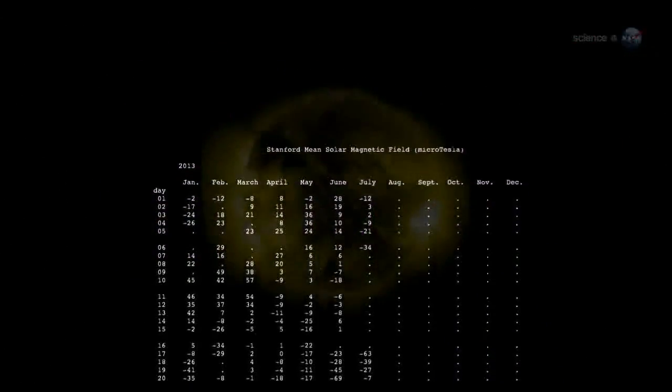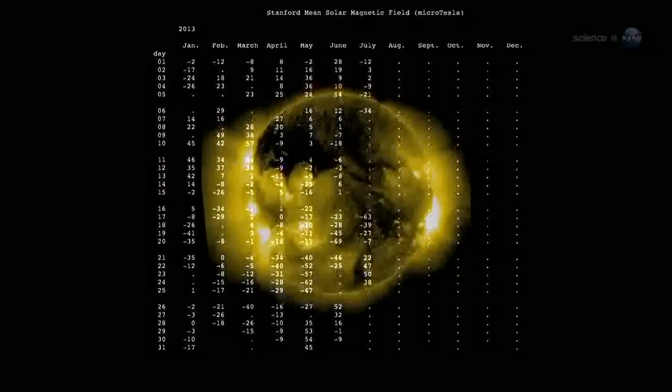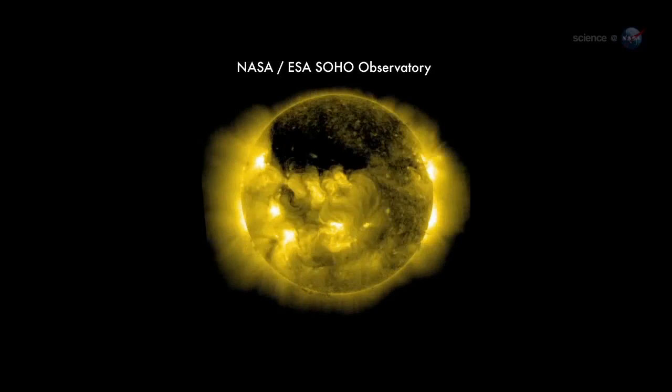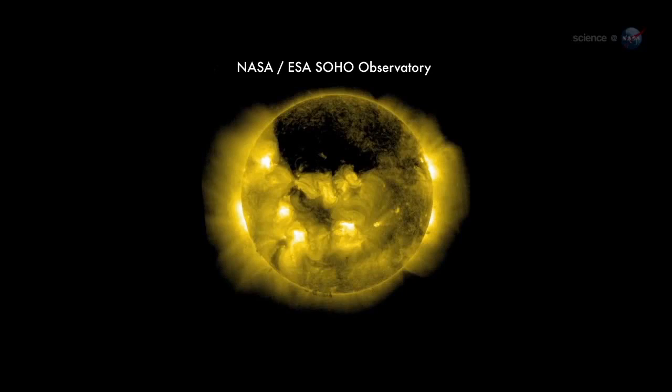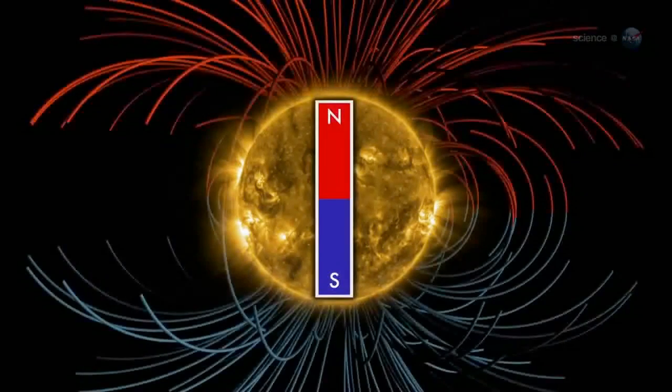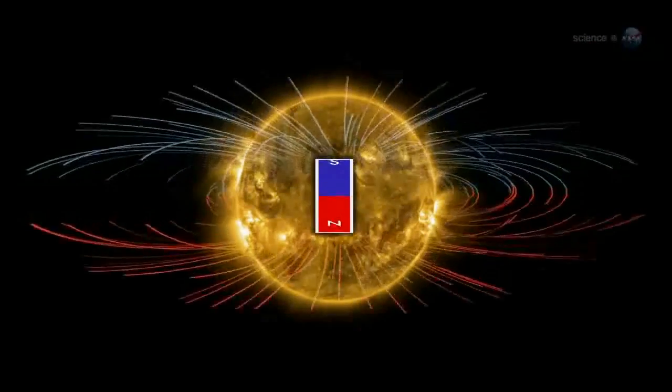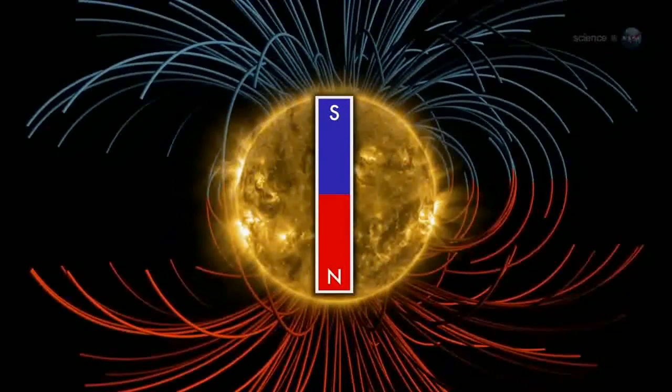As the field reversal approaches, data from Wilcox show that the Sun's two hemispheres are oddly out of sync. The Sun's North Pole has already changed sign, while the South Pole is racing to catch up, says Shearer. Soon, however, both poles will be reversed, and the second half of Solar Max will be underway.